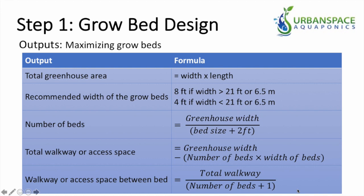If your greenhouse is less than 21 feet (6.5 meters), the recommended bed width is four feet to maximize your space. You can experiment by drawing out an eight-foot or four-foot wide bed to see how a bigger bed in a greenhouse not sized for it uses space inefficiently. If you can accommodate an eight-foot wide bed, that's always the better way to go to maximize the greenhouse space, which is expensive real estate you must maximize.